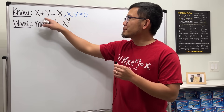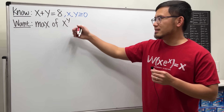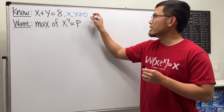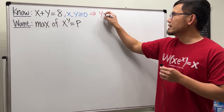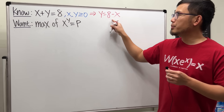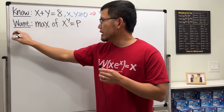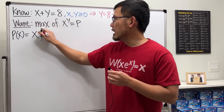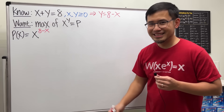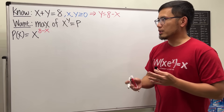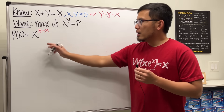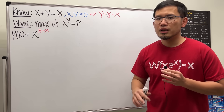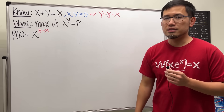Firstly, x plus y is equal to 8, and we want to maximize this. Let's call this p. Then let's write it in terms of just x. From here, we know y is just 8 minus x. So we're looking at p as a function of x — it's just x to the power 8 minus x. Let's do the typical calculus 1 thing: find the derivative, set it equal to zero, find the critical numbers, and make sure it gives us a maximum.